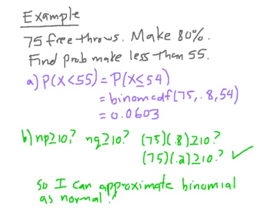So here's our last example. It's kind of a similar example. Now we've got the person shooting free throws, our same person, but now instead of shooting 10 free throws, they're shooting 75 free throws. They still make 80%. We want to know what's the probability they make less than 55 free throws. So I'm going to do this problem twice, once using the binomial formulas and once using the normal approximation that we just learned.